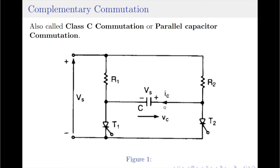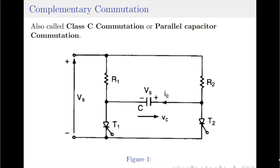The complementary commutation is used to transfer current between two loads, as shown in figure 1. When thyristor T1 is fired, the load with resistance R1 is connected to the supply voltage Vs, and at the same time, the capacitor C is charged to the supply voltage Vs through the other resistor R2. When thyristor T2 is fired, the capacitor is then placed across the thyristor T1 and the load with resistance R2 is connected to the supply voltage Vs.